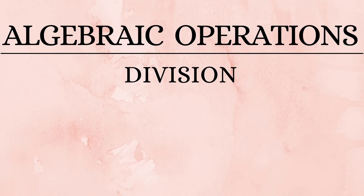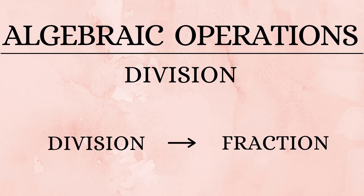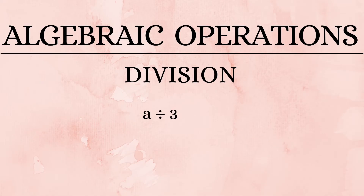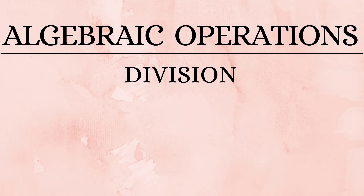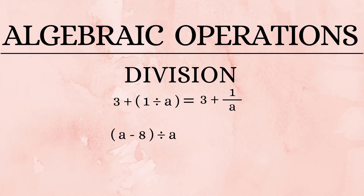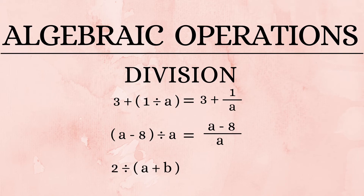Now let's move on to division. Just like the multiplication symbol, the division symbol is rarely used in algebra. We use fractions instead. So 'a divided by 3' is written as the fraction a/3, and 'a divided by b' is written as a/b. Combining division with addition and subtraction: '3 plus 1 divided by a' is written as '3 plus 1/a.' 'a minus 8 divided by a' becomes the fraction with numerator (a minus 8) and denominator a. '2 divided by (a plus b)' becomes the fraction with 2 as the numerator and (a plus b) as the denominator.